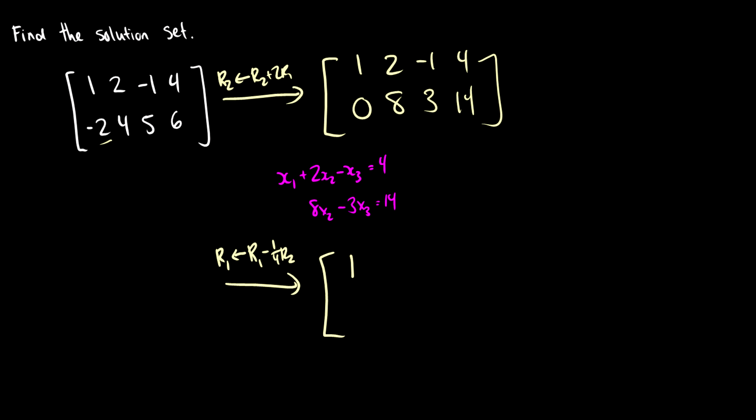So one minus zero is one. Two minus eight over two is two minus two, which is zero. Negative one minus three quarters is negative seven fourths. And four minus 14 over four is 16 over four minus 14 over four is two over four, which is one half. Okay, then the second column will remain untouched.